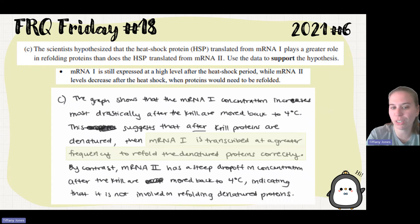So the student says graph shows the mRNA concentration increases most drastically after the krill moves back to 4 degrees. This suggests that after the krill proteins are denatured, then mRNA 1 is transcribed at a greater frequency to refold the denatured proteins. By contrast, mRNA 3 has a steep drop-off in concentration after the krill moves back to 4 degrees Celsius, indicating that this is not involved in refolding denatured proteins.